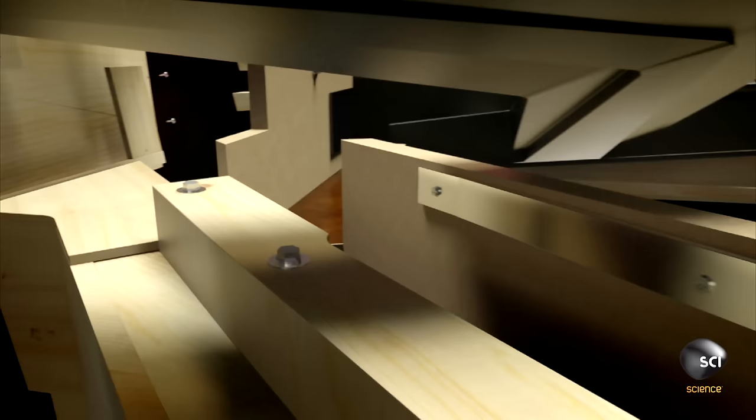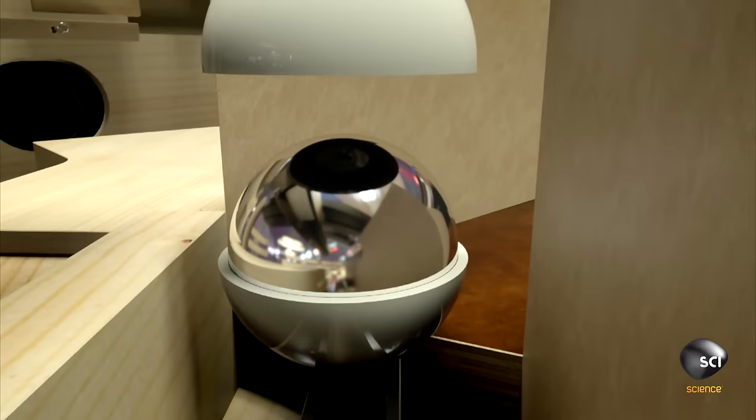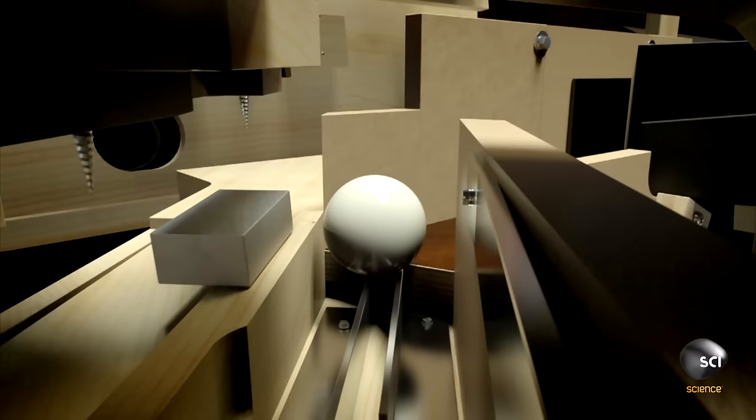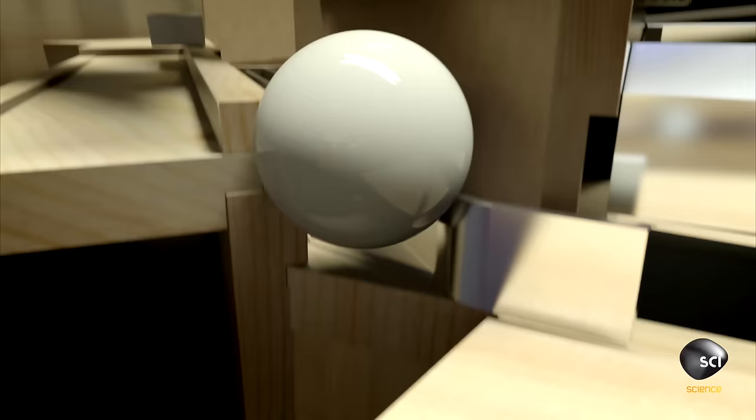Its white coating conceals a thin layer of iron. A strong magnet attracts the metal to pull the cue ball out of the chute and channel it back into play every single time.